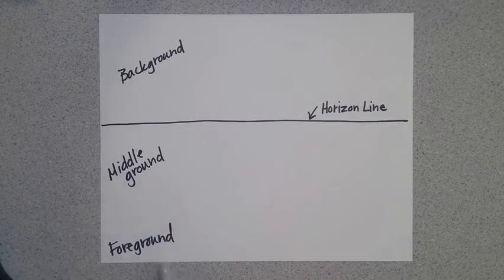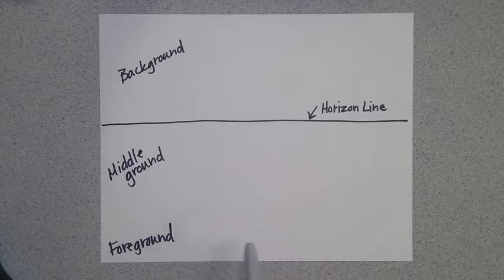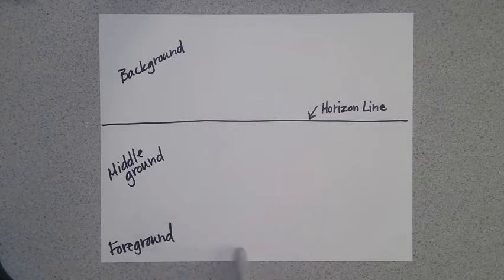And then the foreground, of course, is the part of the picture that's closest to you. It's at the bottom of the picture. Anything you place in the foreground is going to be the biggest things in your picture.